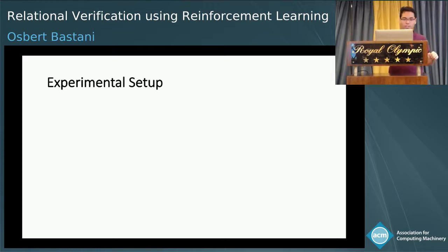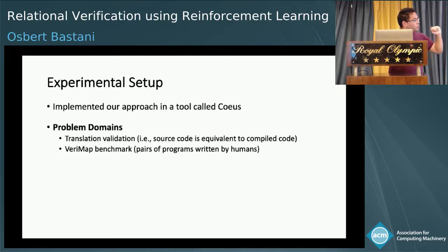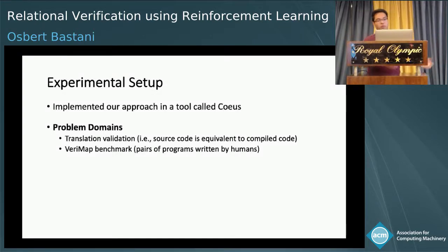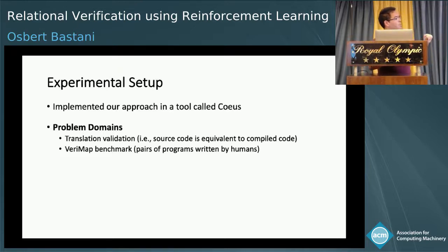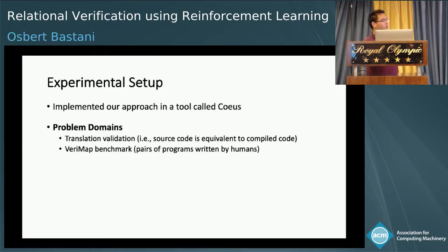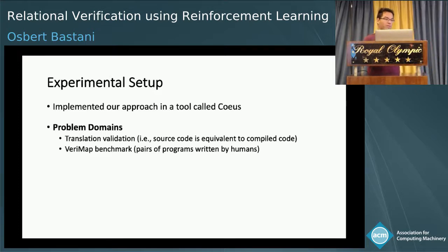We implemented our approach and tried it on two problem domains. The first is a translation validation benchmark, where we want to show that source code is equivalent to some compiled version of it. The second is a VeriMap benchmark — pairs of programs written by humans, where we want to prove various properties about the relationships between these pairs, including equivalence and others. It's a very different benchmark requiring different proof strategies, because human-written programs can differ in dramatic ways — for example, one human might use recursion versus loops — whereas for compilation, the transformations are much more structured.